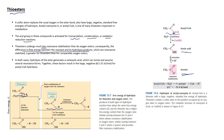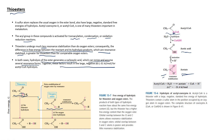The hydrolysis products of thioester, such as coenzyme A, are resonance stabilized. Because they are resonance stabilized, the free energy of hydrolysis of thioesters is much higher compared to oxygen esters. In both cases, hydrolysis of the ester generates a carboxylic acid which can ionize and assume several resonance forms. Together, these factors result in a large negative delta G for acetyl coenzyme A hydrolysis.